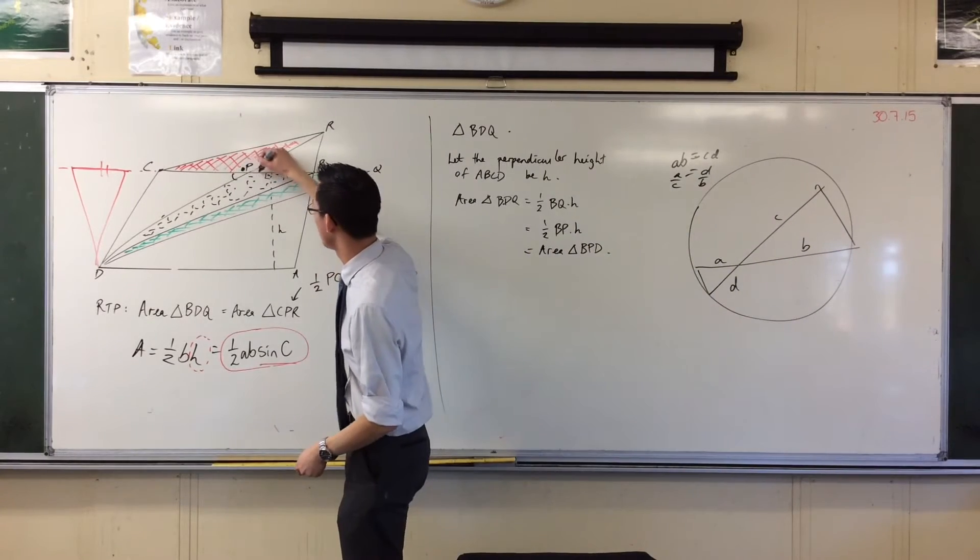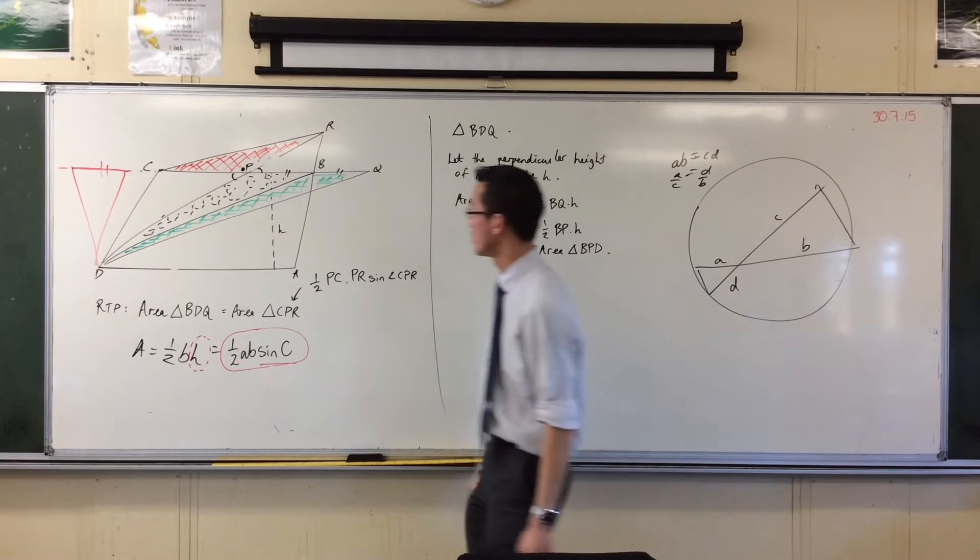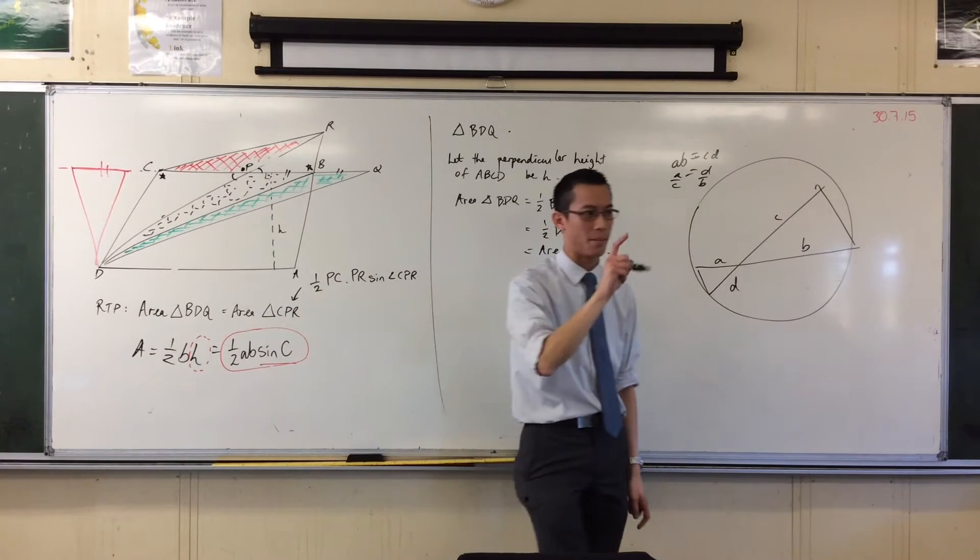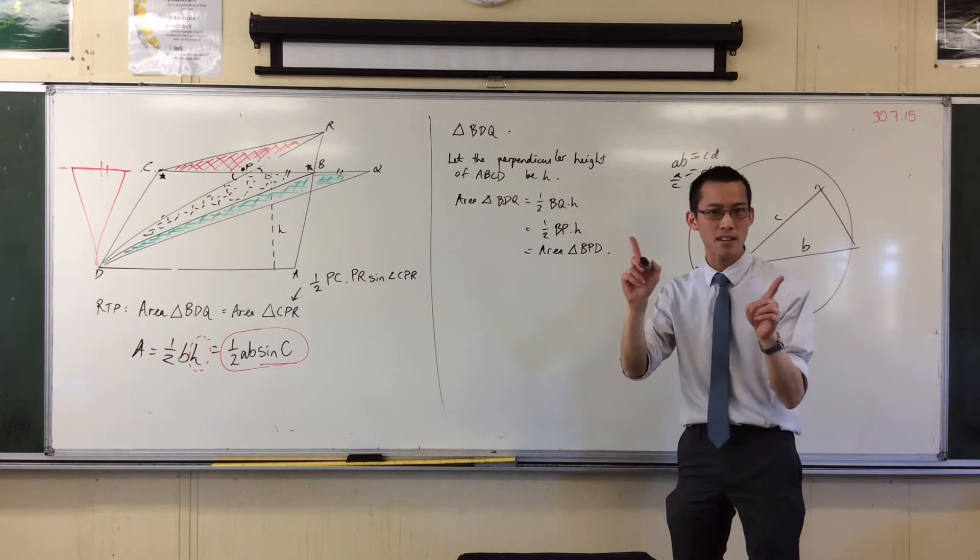Well, number one, vertically opposite. I only need one more pair of angles. How about this guy and this guy? Bam, right? Why are they equal? Why are the stars equal in this case?